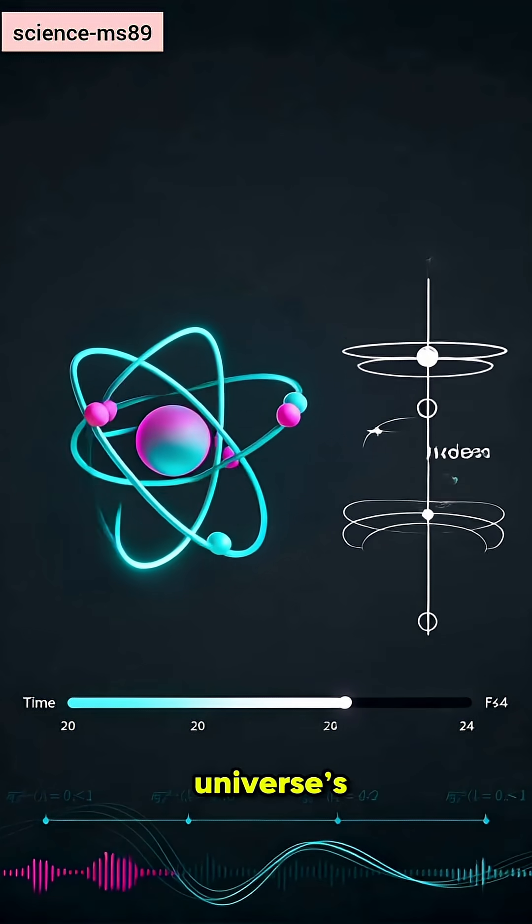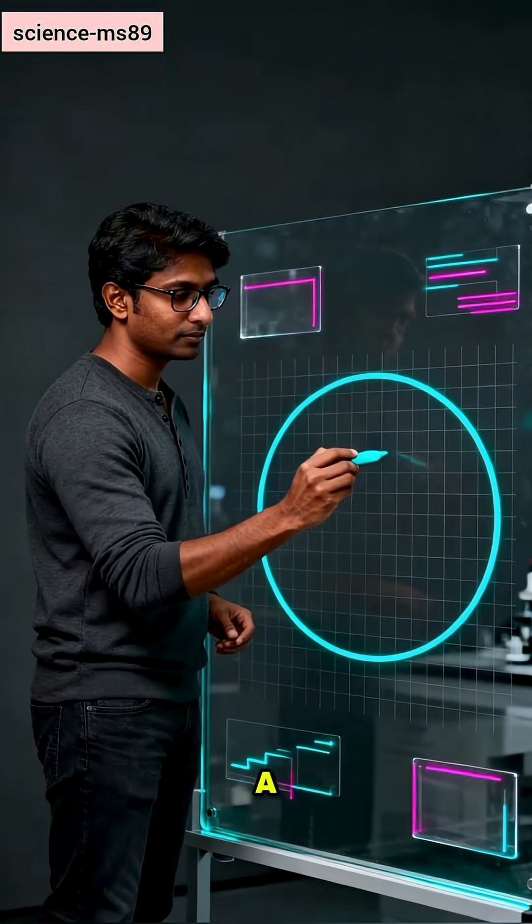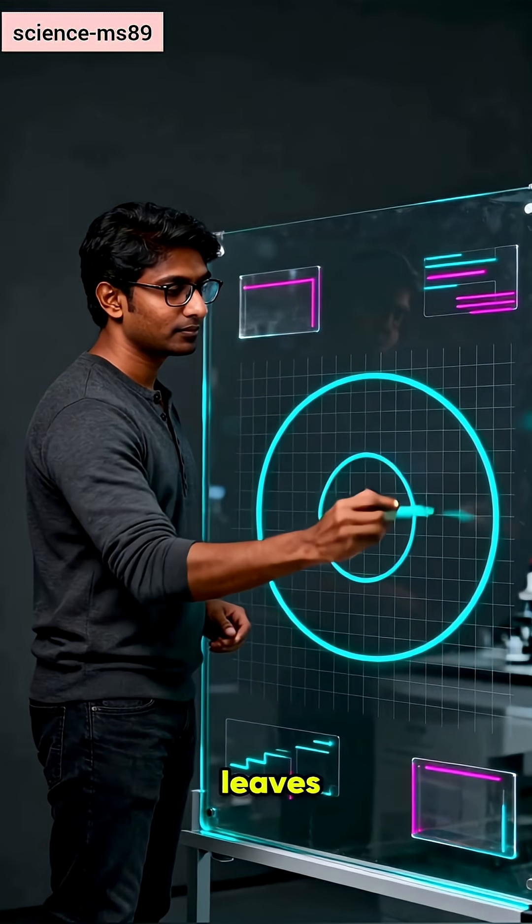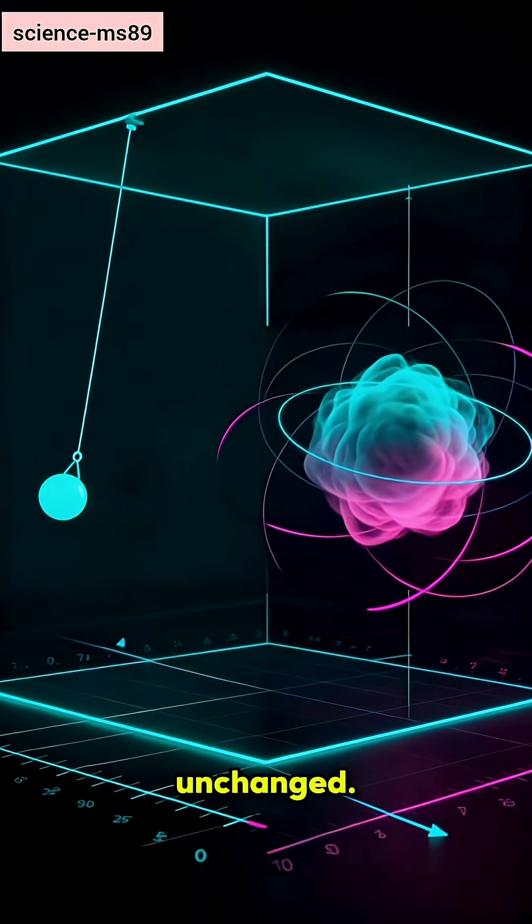Symmetry. The universe's cheat code. A symmetry is a transformation that leaves a system's governing laws unchanged.